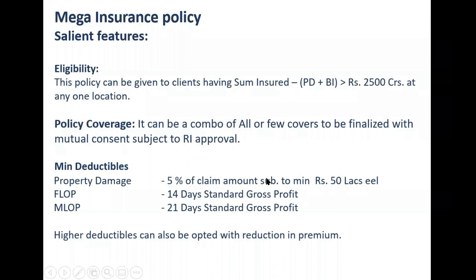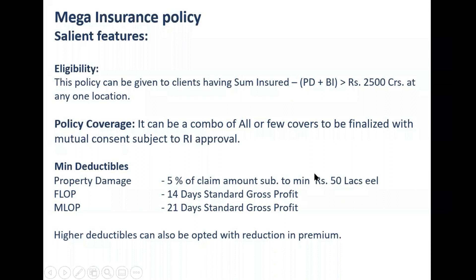It is a good thing since it is a large risk policy given to big clients with wider cover, wider add-on covers, wider scope, bare minimum exclusions, limited exclusions, all risk cover. So the deductible has to be a little higher. For property damage it is 5% of claim with a minimum of 50 lakhs. For BI, minimum 14 days. For machinery breakdown and MLOP, it is 21 days. It can be higher but cannot be lower. This is what GIC has prescribed. GIC says unless the deductibles are at minimum this level, they will support. Otherwise you are free to go to the international market. If international reinsurance companies are ready to support you at lower deductibles, it is fine, but our experience is it is practically impossible to get lower than this.